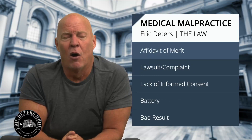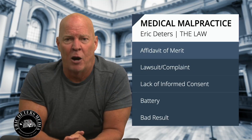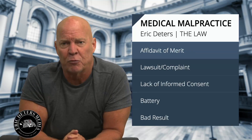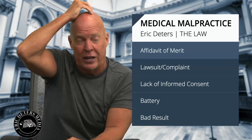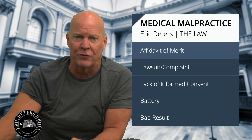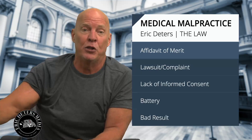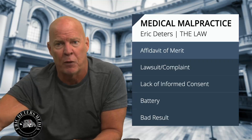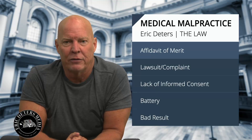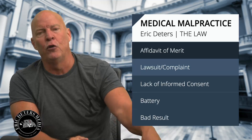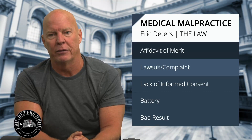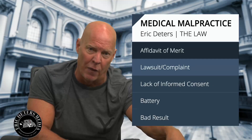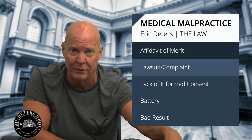In Ohio, you have to have an affidavit of merit before you file your lawsuit. Sometimes you can get an extension for your expert's affidavit. In Kentucky, you don't have to have an affidavit from your expert, but the lawyer has to swear that they reviewed it with an expert. The lawsuit — actually called a complaint — is prepared and filed in the county where the malpractice happened.